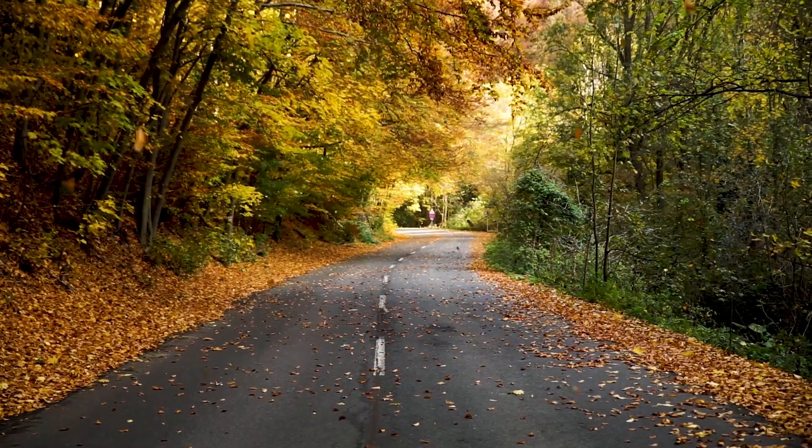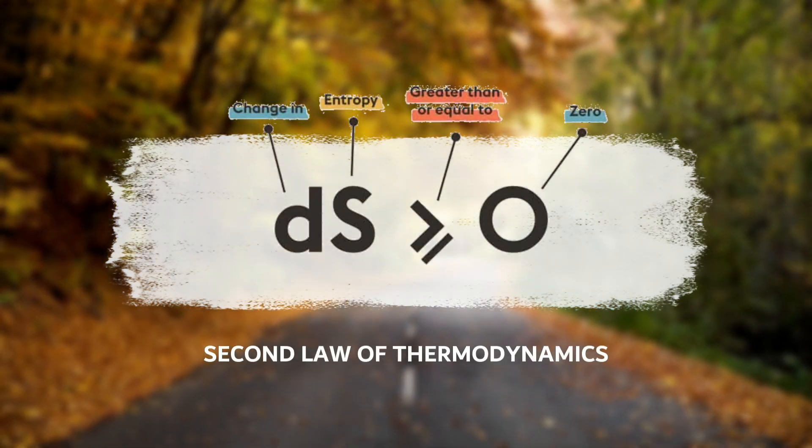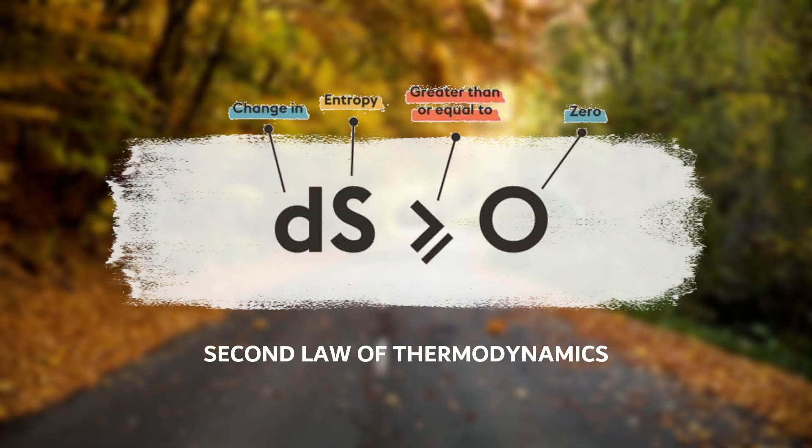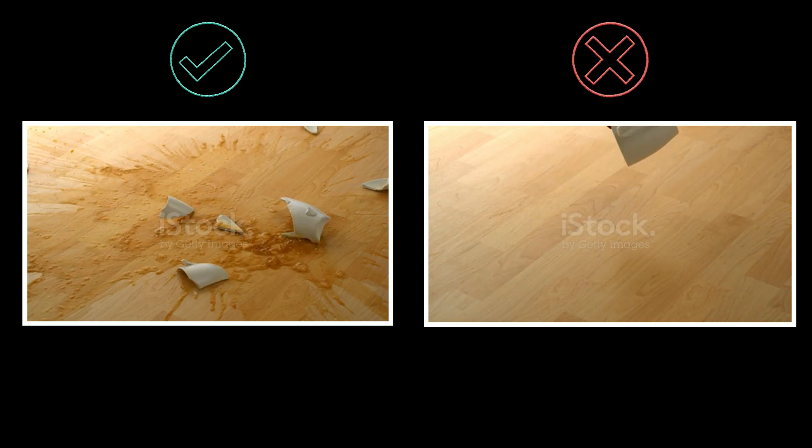At fifth position we have the Second Law of Thermodynamics, which has to do with entropy. Entropy gives us an idea about the degree of disorder or randomness of a given system. The second law states that the entropy of an isolated system is either constant or always increases. Physical events happen so as to increase the overall entropy of a given system. For example, a glass can fall and shatter into thousands of pieces, but the reverse can never happen.